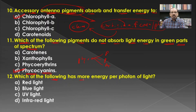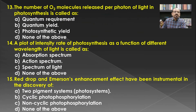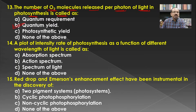Which of the following has more energy per photon of light? Considering the energy content of red light, blue light, ultraviolet light, and infrared light, the maximum amount of energy is present in ultraviolet light. Then, the number of oxygen molecules released per photon of light in photosynthesis is called quantum yield, and B is the correct answer.